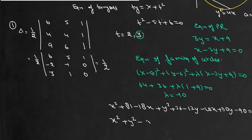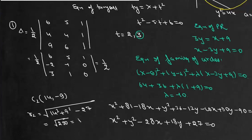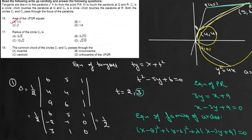The equation of circle C2 is x² + y² - 28x + 18y + 27 = 0. The center is at (14, -9) and the radius is √(14² + 9² - 27) = √(196 + 81 - 27) = √250 = 5√10. So the radius of circle C2 is 5√10, which is option B.